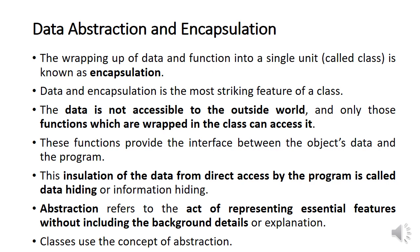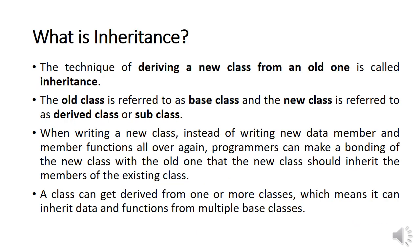Classes use the concept of abstraction. The fourth important concept of OOP is inheritance. Deriving a new class from an existing class is called inheritance. The existing class is called the base class, and the new class derived from it is called the derived class or subclass.